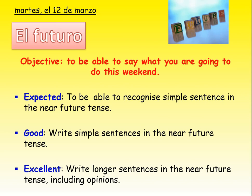This is our last lesson in our free time series. You've just done an Oak Academy lesson to recap a lot of, or three of the tenses. So we're going to recap the future tense now in context of free time and look at one other aspect of our free time or entertainment and leisure topic before we put it all together in our conversation questions.